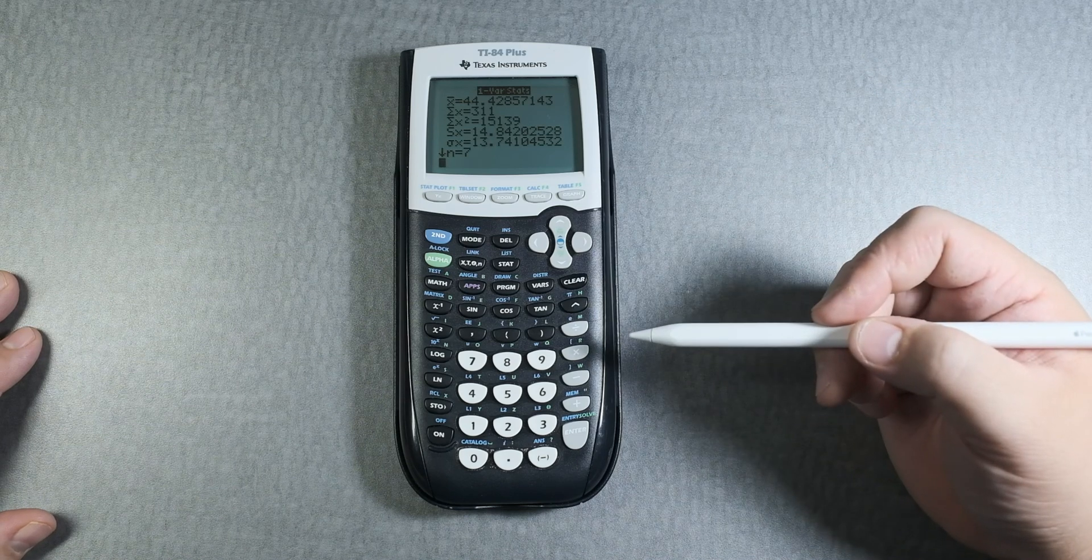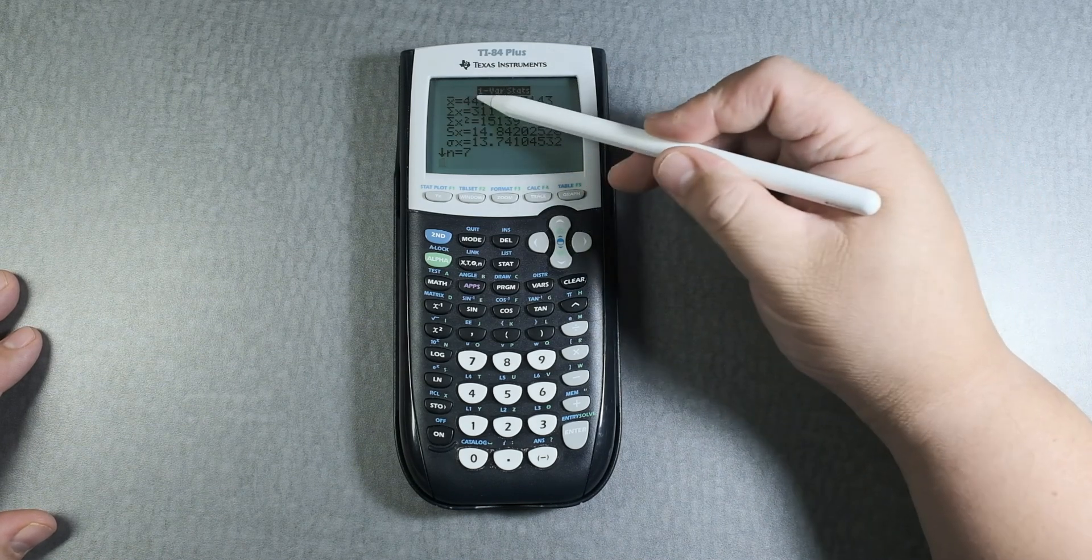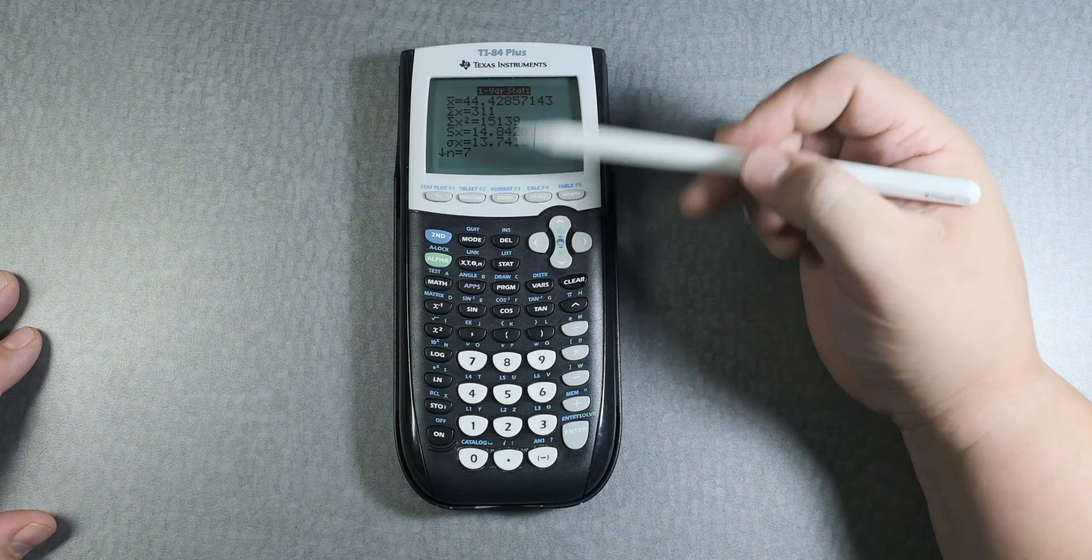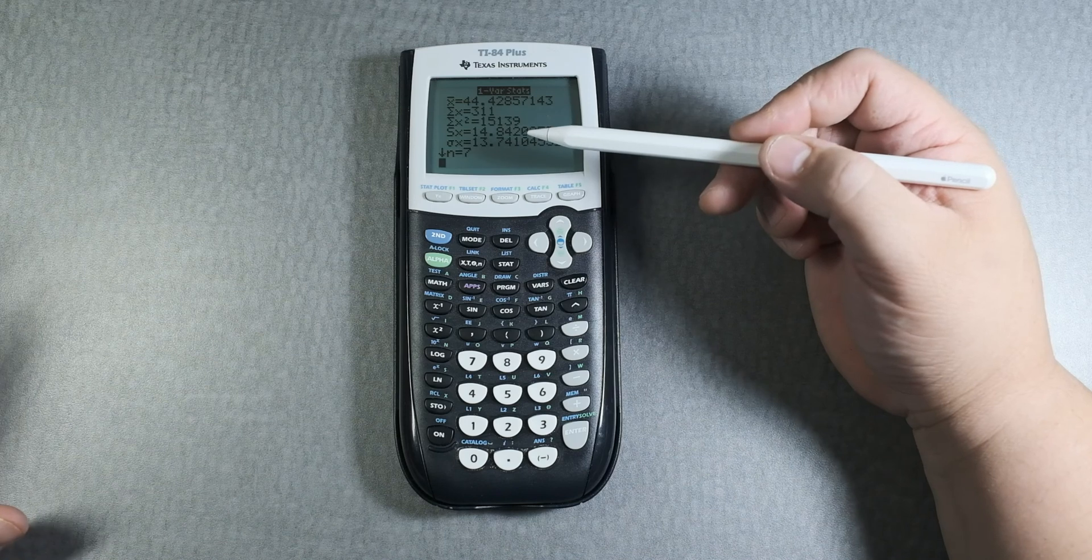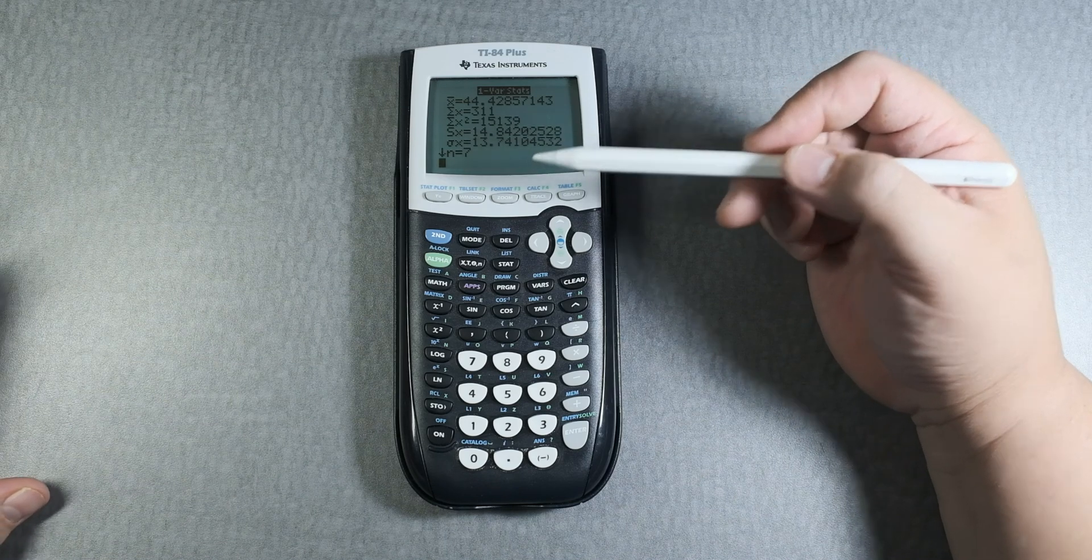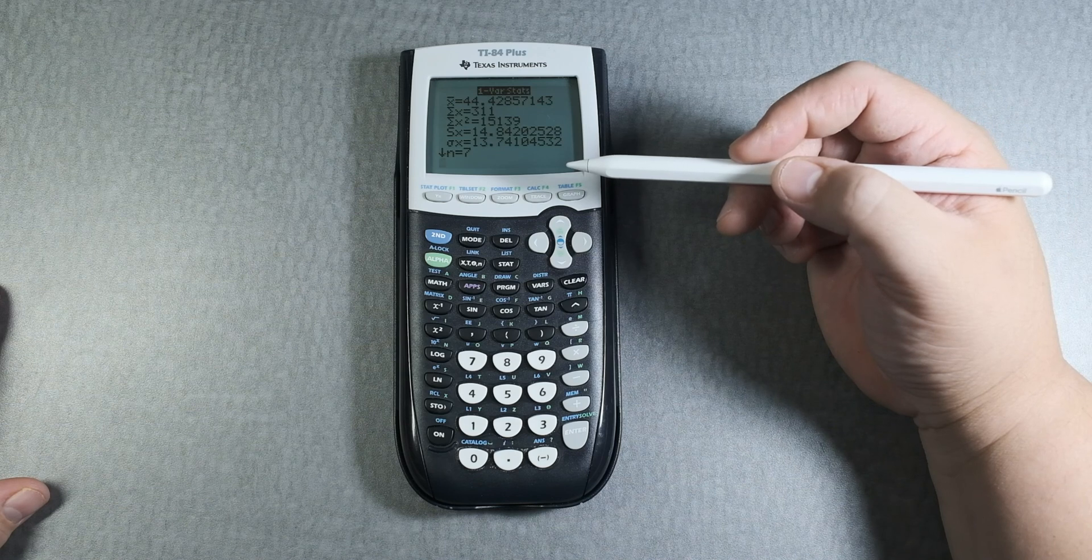There it is. So the one variable statistics gives you a lot of information. It gives you the mean, the sum of x for that list, the sum of x squared. And those are used a lot sometimes in different things like correlation coefficient or maybe standard deviation.